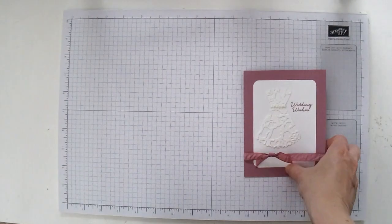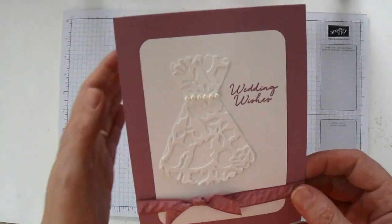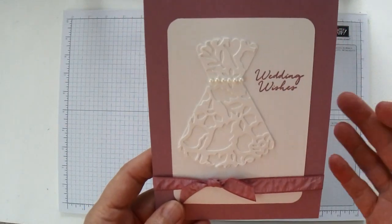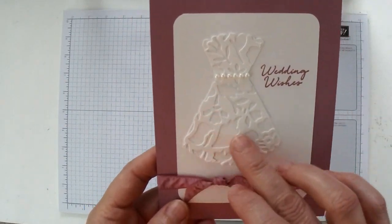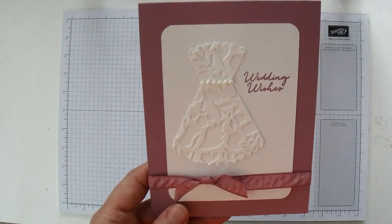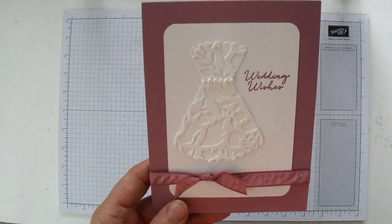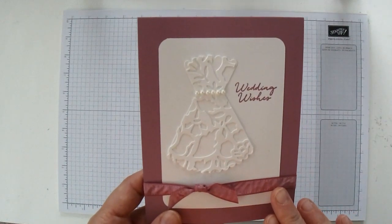And here is the card that we're going to be making. It is actually kind of a simple looking card, but it's very elegant because we're going to use the detailed floral thinlets to make this lacy looking dress, and then we're just going to layer it onto some cardstock and add a little bit of ruched ribbon. So let me show you how to make this card.